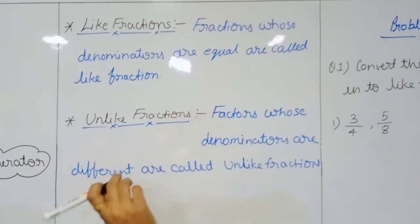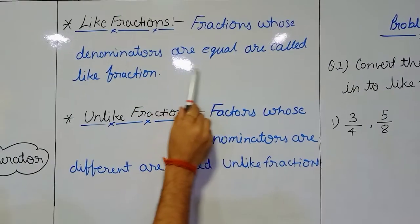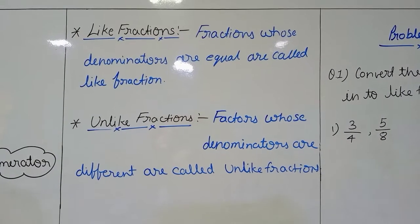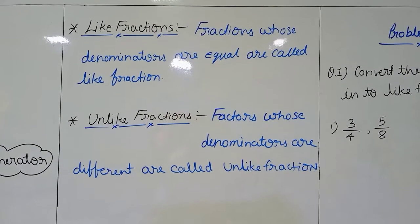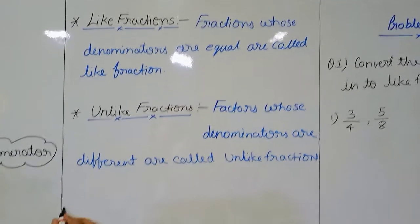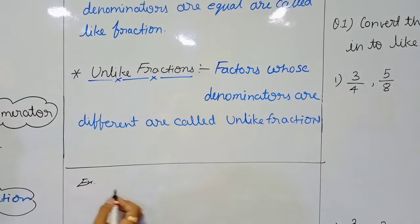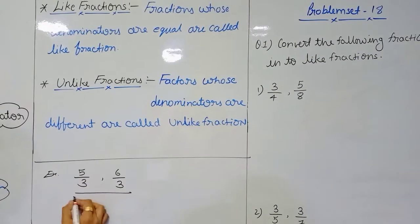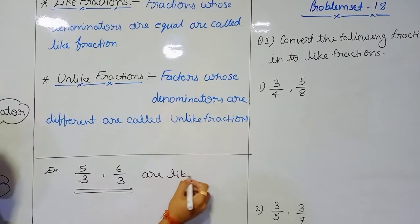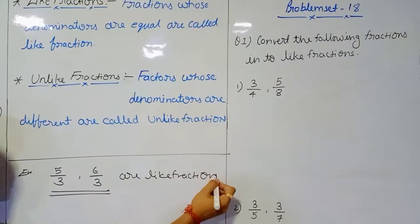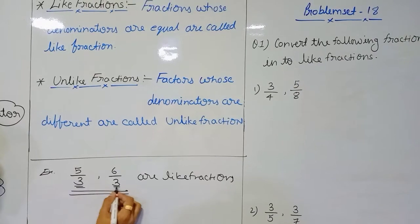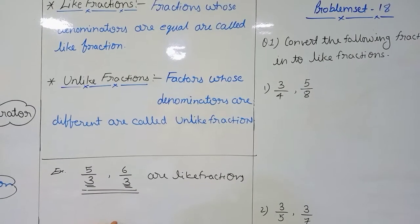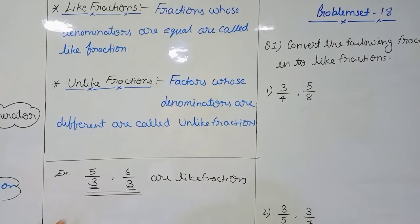The first one is like fractions. Fractions whose denominators are equal are called like fractions. Whenever we have two or more fractions and the denominator is equal, those are called like fractions. For example, five upon three and six upon three — these two fractions are like fractions, because the denominator in both fractions is three.